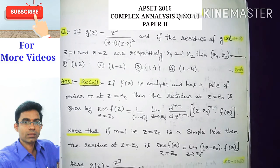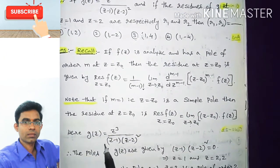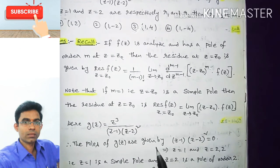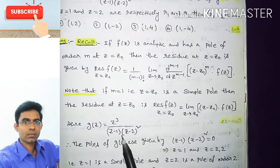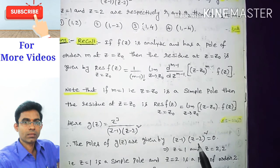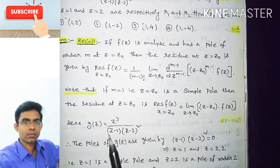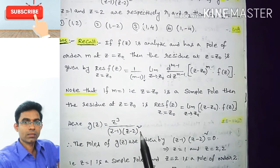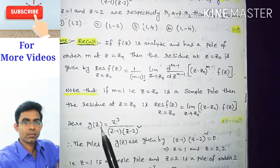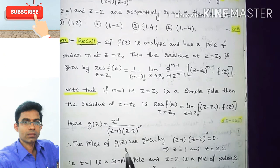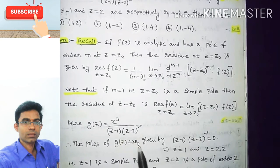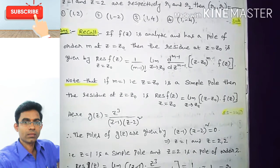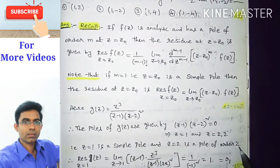The given function is g(z) = z³ / [(z-1)(z-2)²]. The poles are found by setting the denominator equal to zero: (z-1)(z-2)² = 0. Since both numerator and denominator are analytic, g(z) is analytic away from its poles. This gives z = 1, which is a simple pole, and z = 2, which is a pole of order 2.